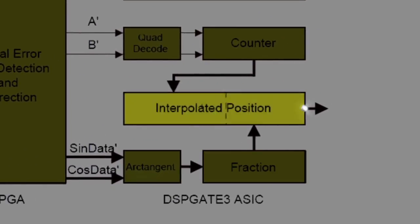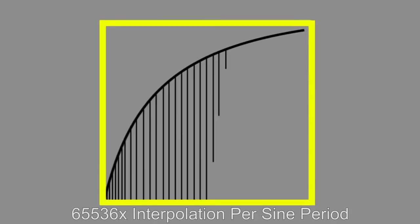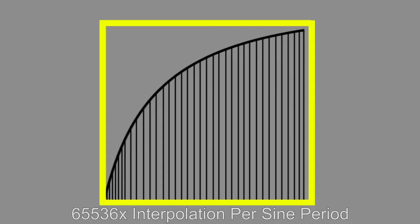The interpolator will accept these signals directly and then divide each line of the encoder into 65,536 individual distinct states. This provides for an unprecedented level of resolution in a feedback device.